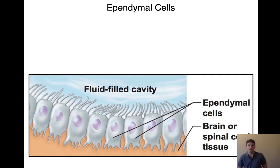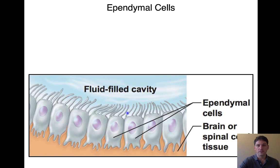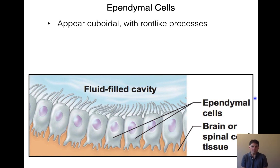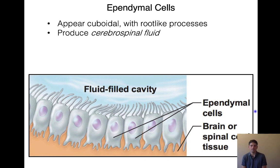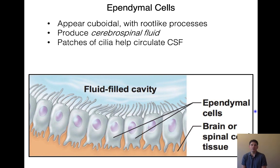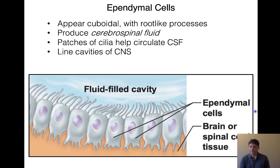Our ependymal cells should look fairly familiar — they look cuboidal or columnar with nice little extensions and some cilia coming off their plasma membranes. They have little root-like processes integrating into the brain or spinal cord tissue. We find these inside your brain in the ventricles, where they produce cerebrospinal fluid (CSF). Those cilia beat and help circulate the CSF throughout our ventricular system. We find them in various cavities of the central nervous system — you'll learn about that in labs.